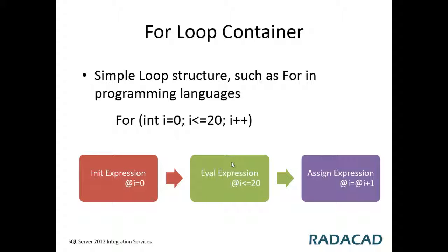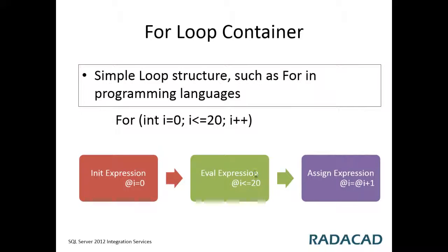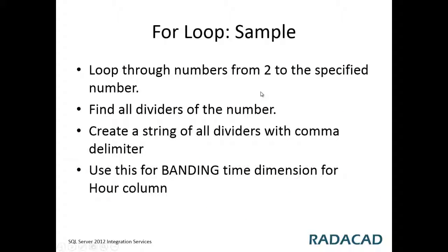In this video, I use a loop structure to loop through numbers from 2 to a specified number to find all integer dividers of that number. For example, for the number 6, all dividers are 2, 3, and 6 — but I skip 1 and the number itself, so I only pick 2 and 3. I then create a comma-delimited string with all those dividers.